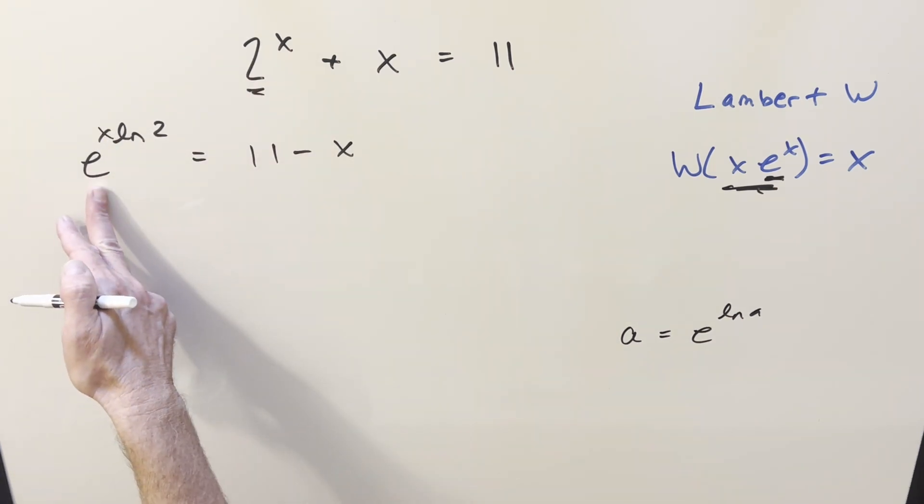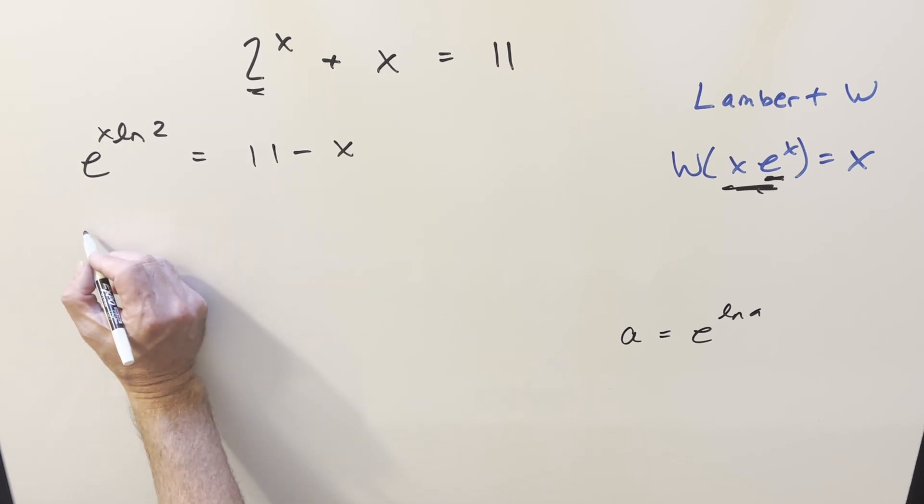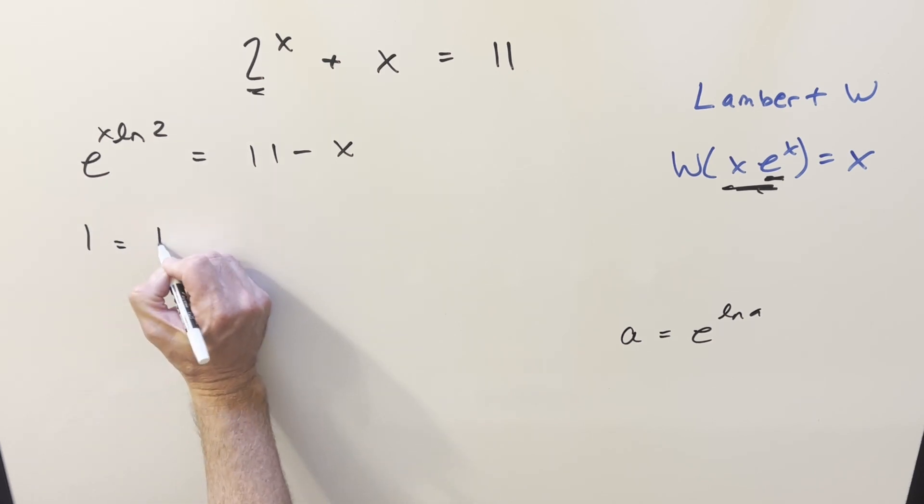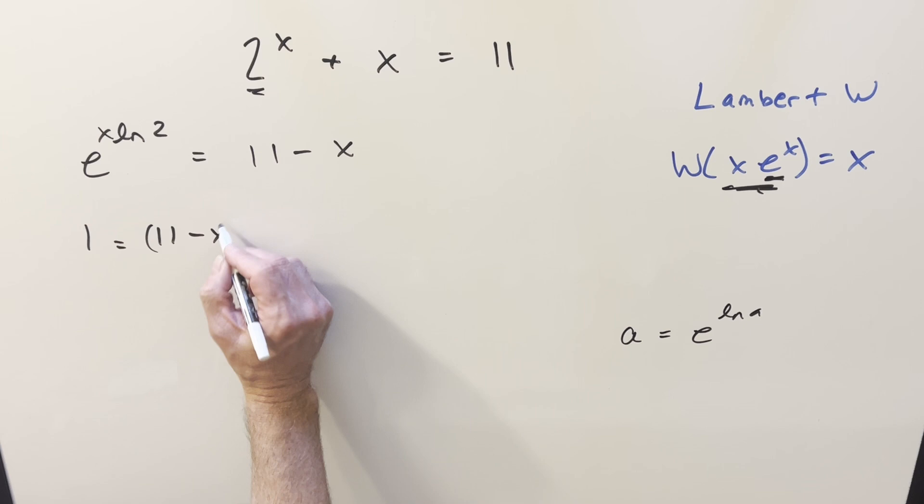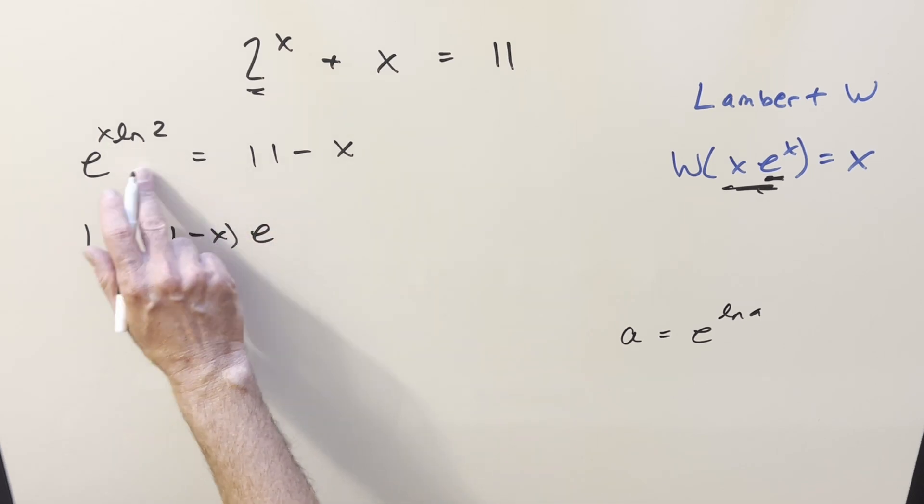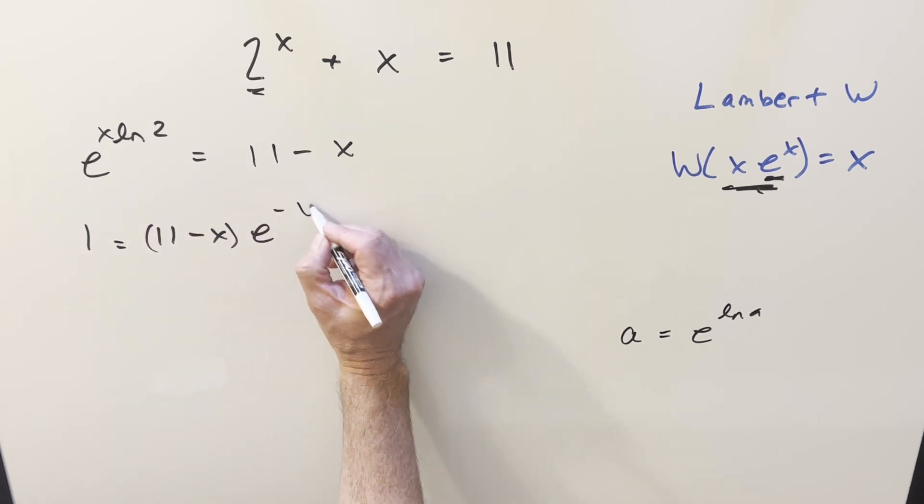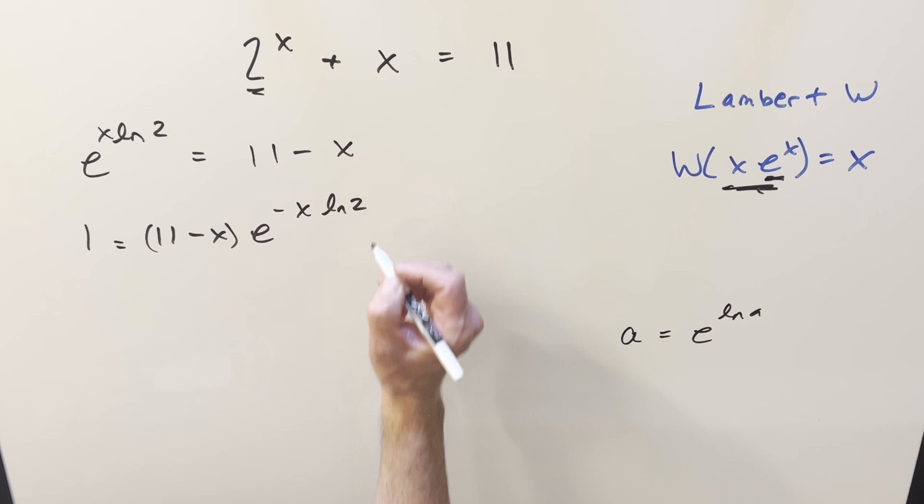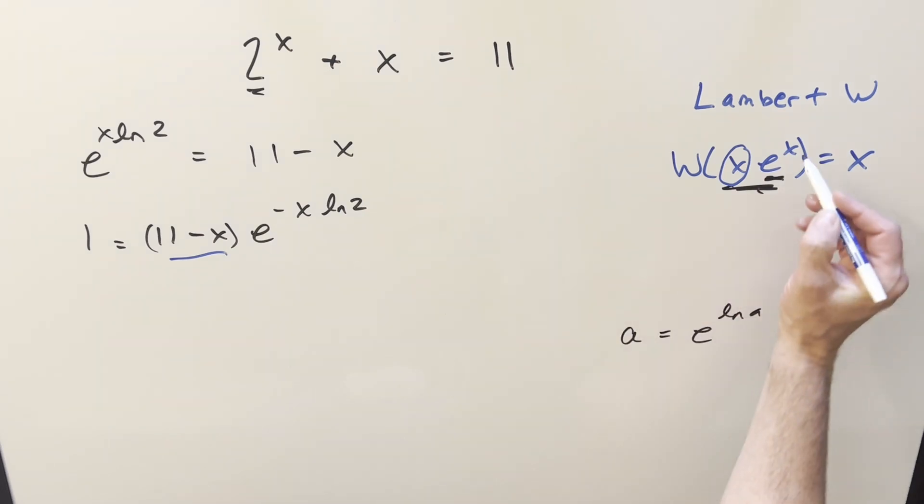Let's divide off this expression on both sides. So if I divide by this on the left side, the left side just becomes a 1. On the right, we'll have this 11 minus x all times e. Then dividing it, we're going to have a minus on the exponent now, minus x ln 2. And so now in order to use this formula, what we need is we need the same coefficient in front of the e as what we have in the exponent, and then we can just take that value and bring that out and get some simplification.